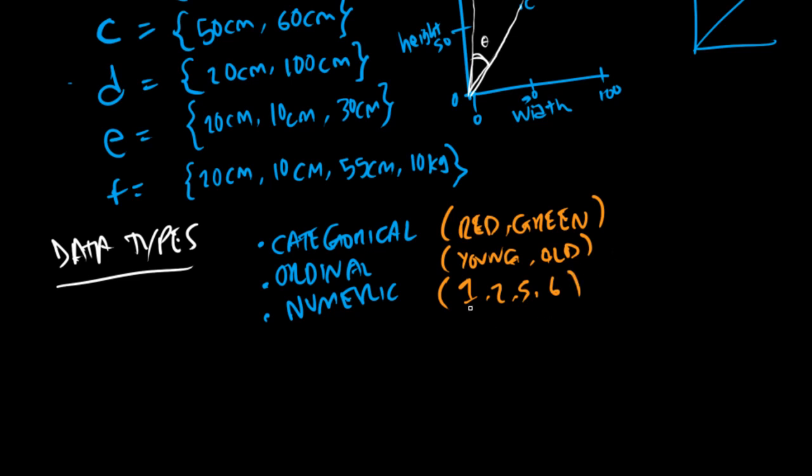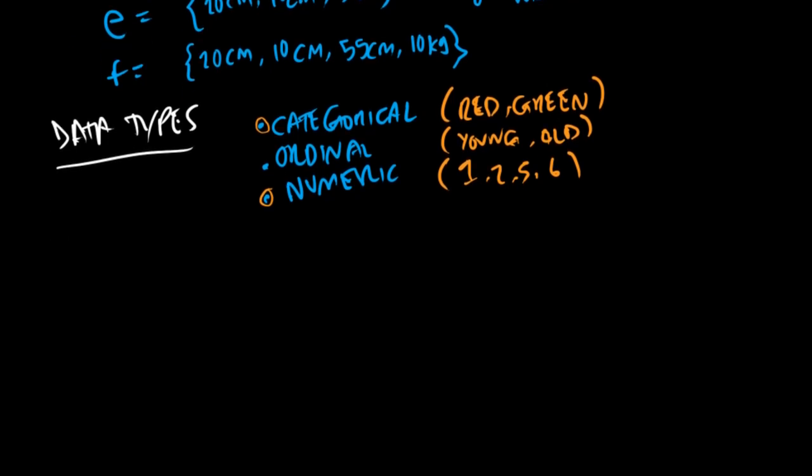So what would binary be? Well, binary can technically be numeric, zero or one, or categorical, true or false. This basically depends on how you actually want to represent your data.